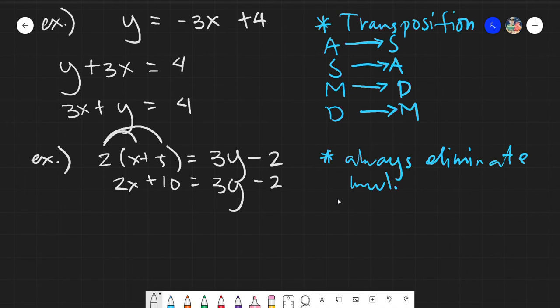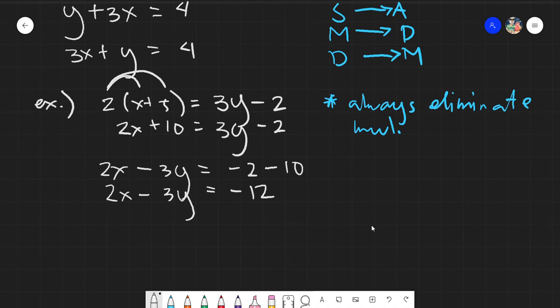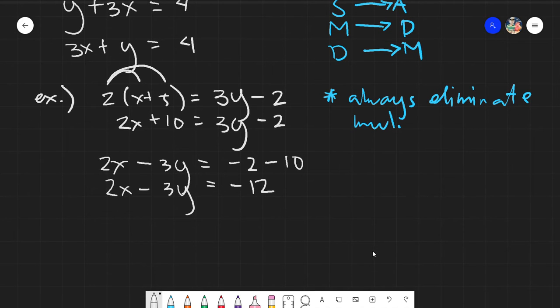So transposition means all constants will be here and all y's and x's will be here. So now let's transpose. Let's just have that 2x. 3y becomes negative 3y. 10 becomes negative, so negative 2 minus 10, giving you an answer, a final answer of 2x minus 3y equals negative 12. So in this case, you will notice that you are already in the standard form or the general form, then you are already done.